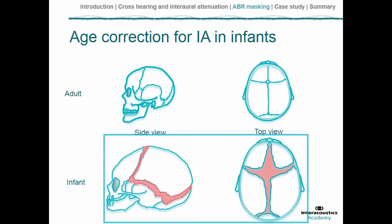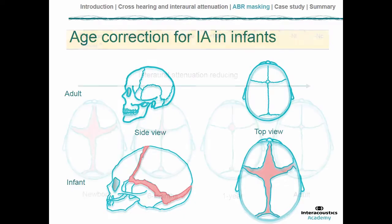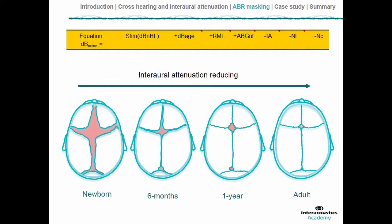In an infant, the plates of the cranium are not yet fused — the gaps are filled by fibrous cartilaginous tissue. This allows the plates to move and slide around as the infant passes through the birth canal, since we are bipedal primates with a relatively narrow birth canal. Because the cranial plates aren't fused, interaural attenuation is higher in infants — it's harder for sound vibrations to pass across the skull. So the age correction works in our favor: there's somewhat less need for masking.